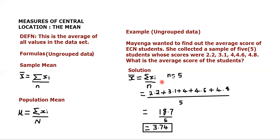Our values are 2.2, 3.1, 4.4, 4.6, and 4.8. They've already told us that she collected a sample of five students, so n equals 5.